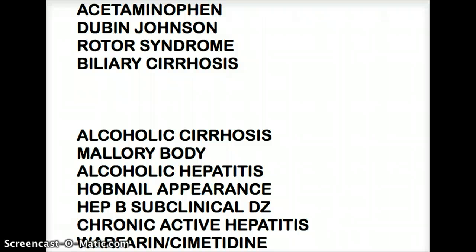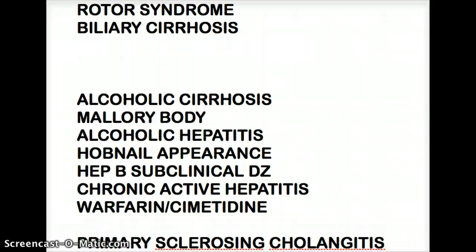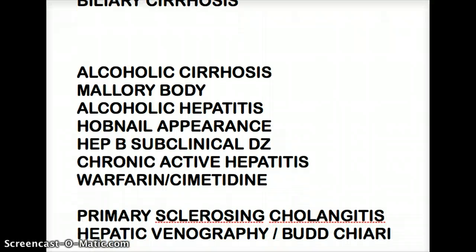Another disease I wanted to talk about in relation to the liver is primary sclerosing cholangitis. This is the one that causes the beaded appearance of the bile ducts inside the liver. Its association with ulcerative colitis, which can give rise to secondary biliary cirrhosis, is also very important to remember.